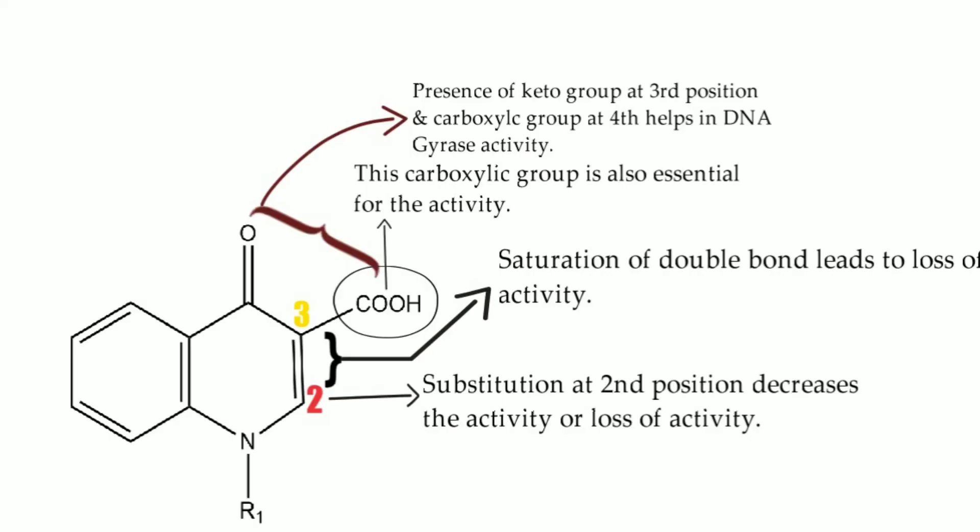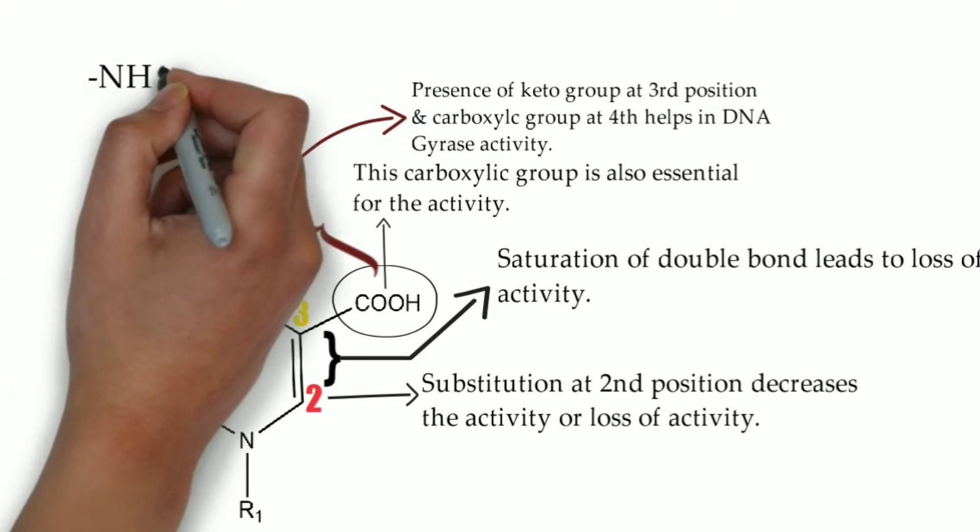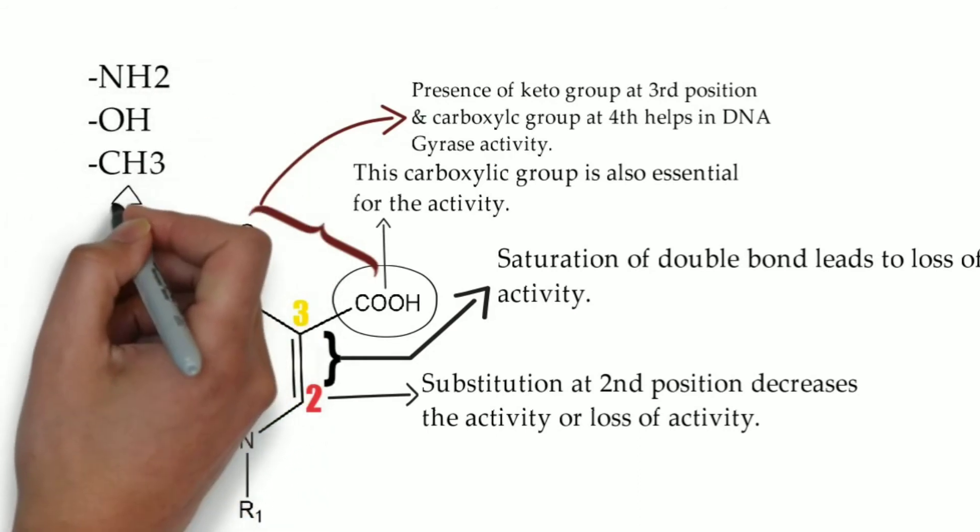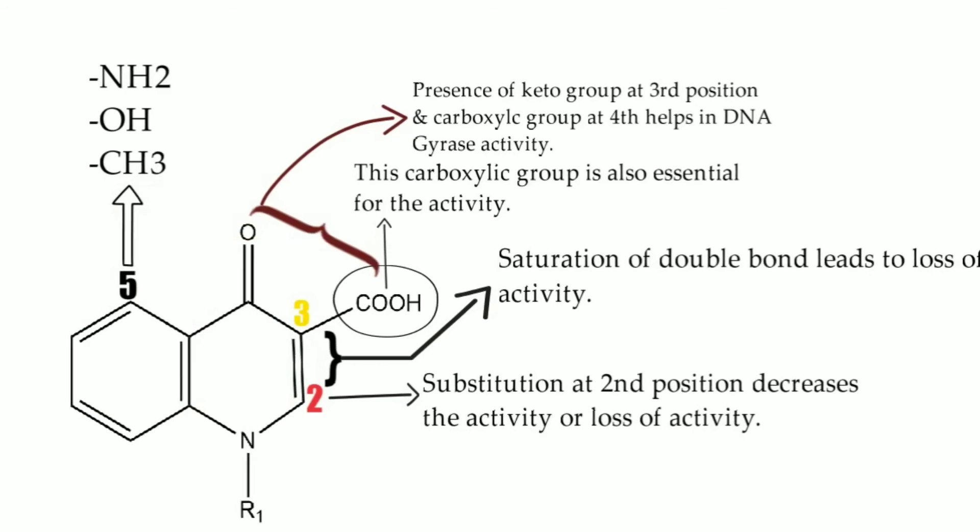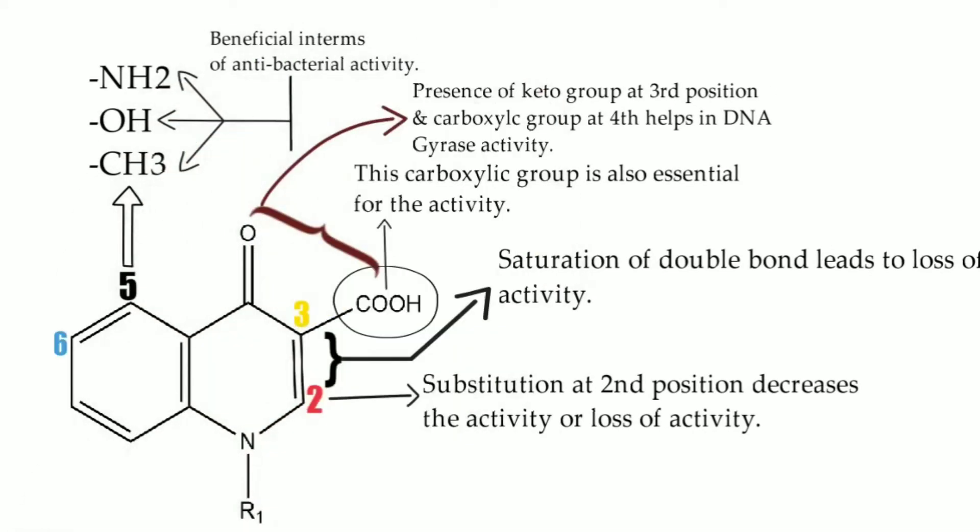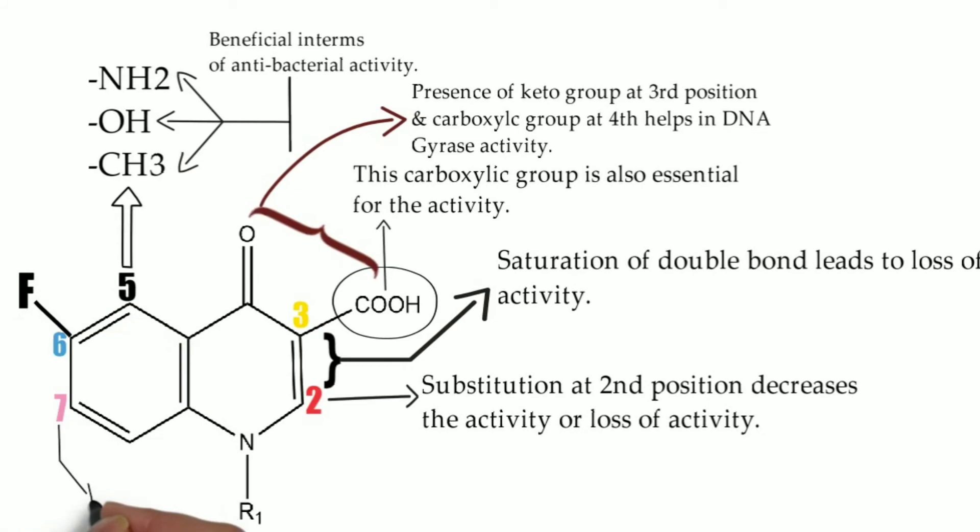If we see the fifth position, if we introduce three groups like NH2, OH, or CH3, they are beneficial in terms of antibacterial activity. And if we add fluorine atom at sixth position and piperazine ring at seventh position, it will result in the formation of fluoroquinolones.